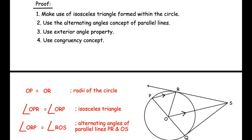Let us consider triangle POR — this is an isosceles triangle because OP equals OR, as they are both radii of the same circle. If two sides are equal, the opposite angles are equal, so angle OPR equals angle ORP. Since these two sides are the same, the angles are equal — this is the property of an isosceles triangle.